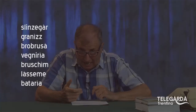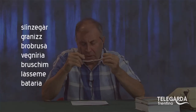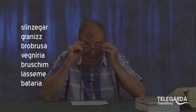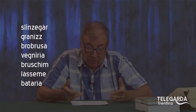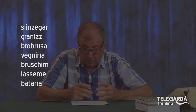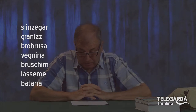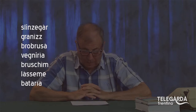Incominciamo a parlare di accento tonico. Vedete comparire queste parole: slìnzegàr, scivolare — l'accento tonico è sulla A. A volte non lo si trova questo accento; Fox dice che non serve. Ma io, per questione di infinito presente, preferisco metterlo. Quindi slìnzegàr, un bel accento tonico sulla A.